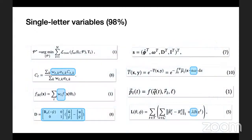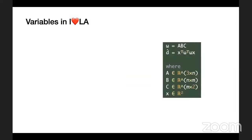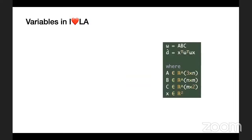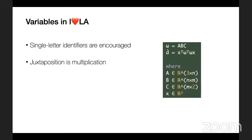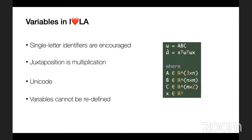Unlike in traditional programming languages, select variables in math have decorations like Unicode. AHDA-A adopts these ideas to look and feel like conventionally written math: we encourage single-letter variable names, which allows for unambiguous multiplication by juxtaposition and convenient syntax for accessing matrix elements. Unicode allows for a large number of expressive variable names, including text decorations. Variables cannot be redefined, and compatible matrix and vector dimensions are statically checked.